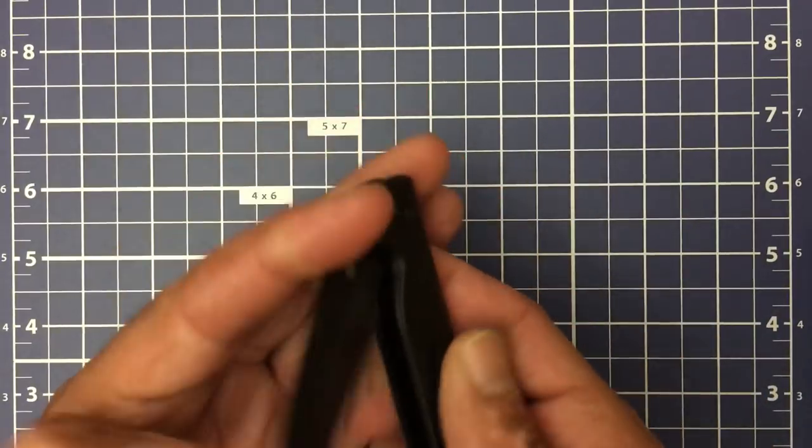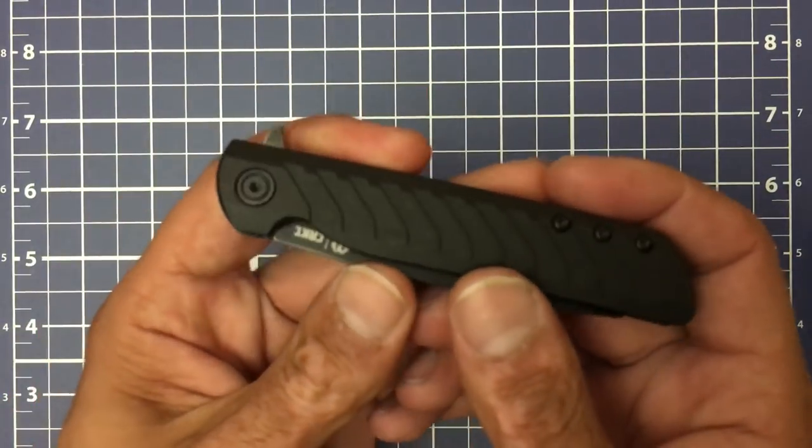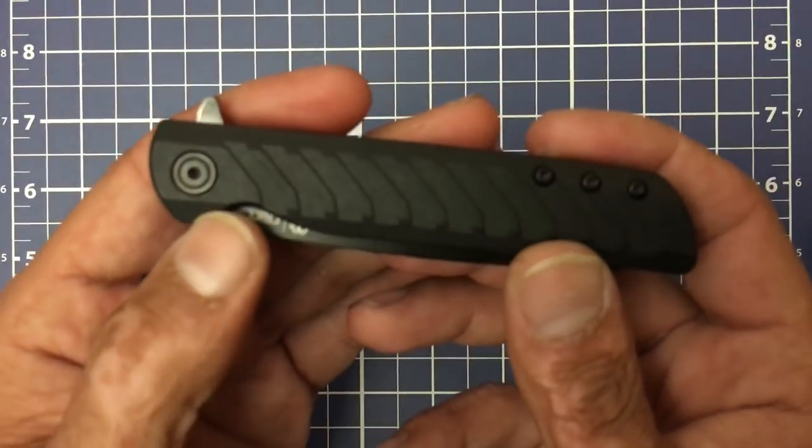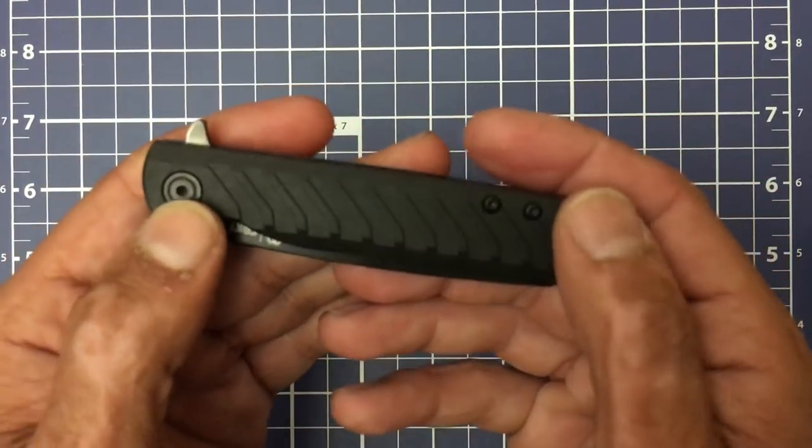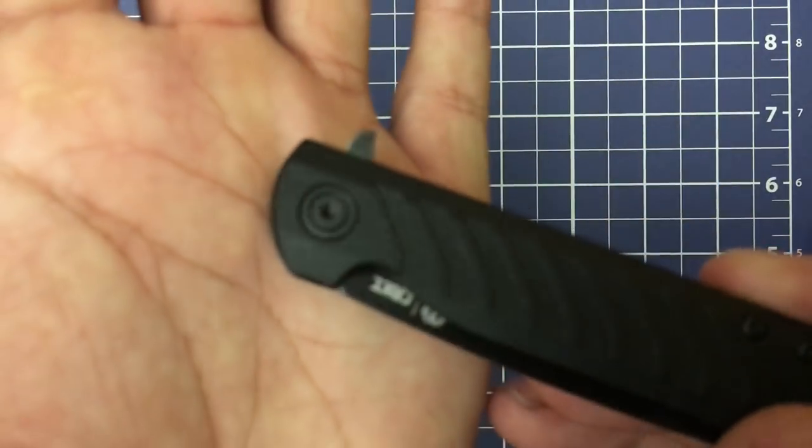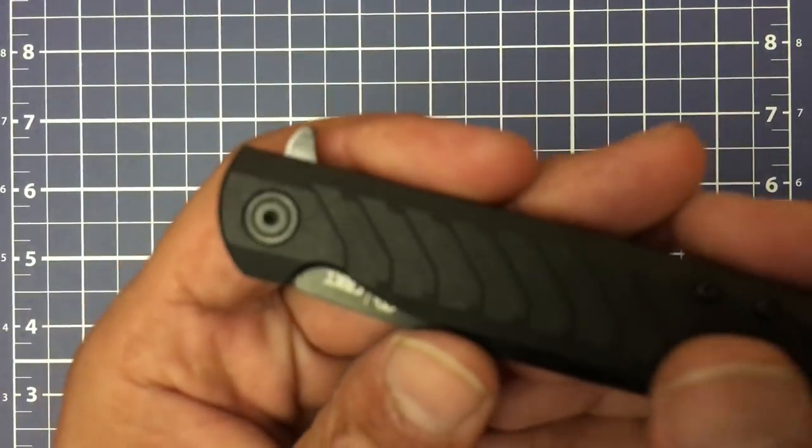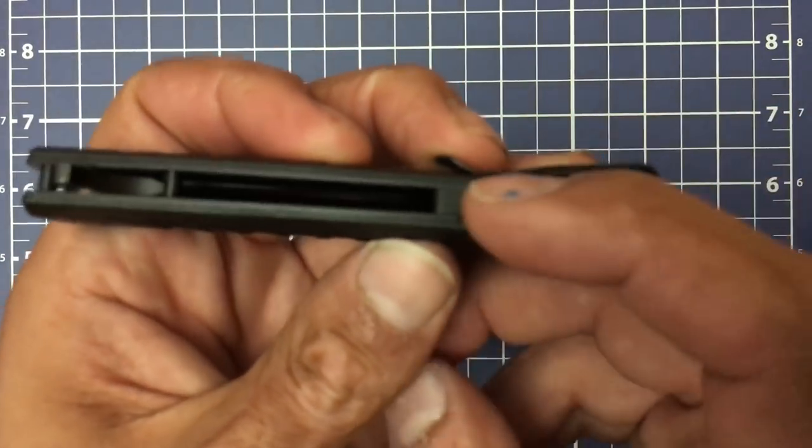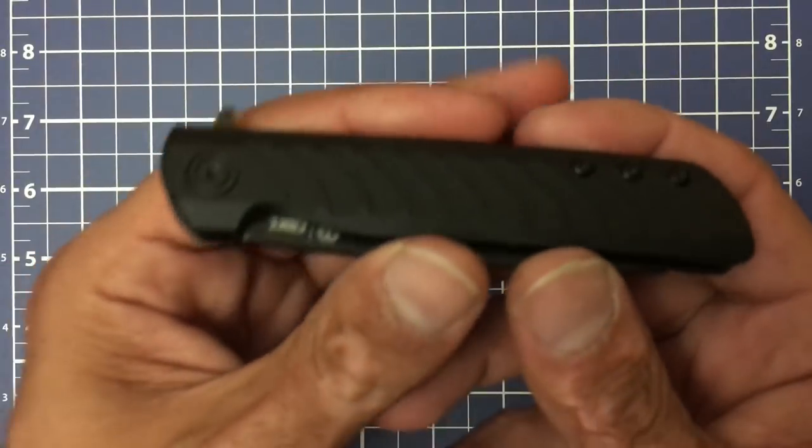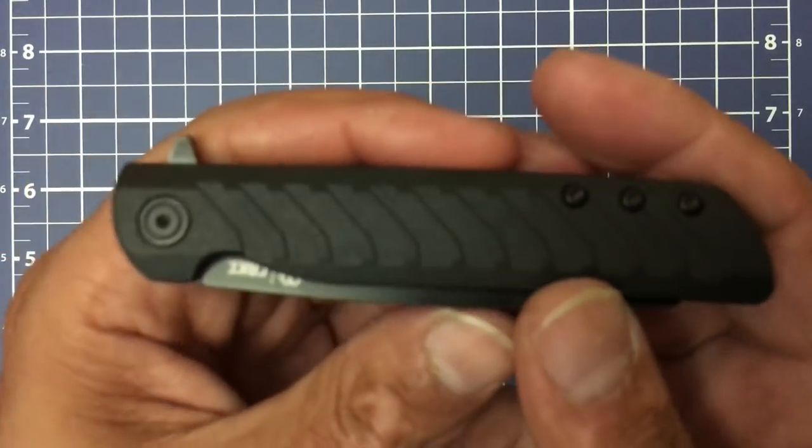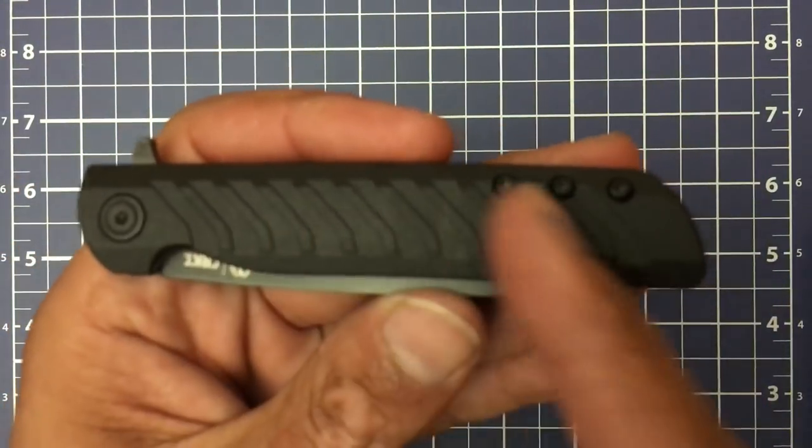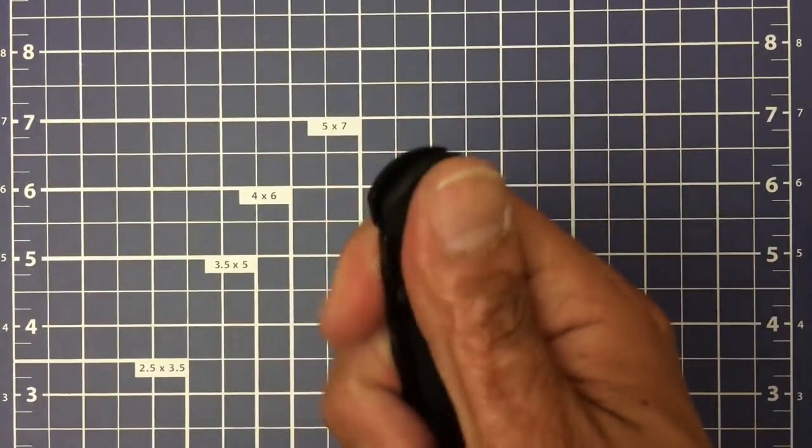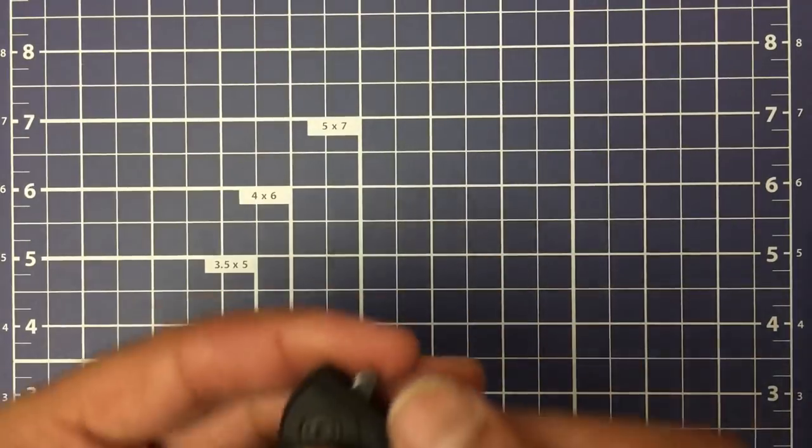Let's close this guy up. You have these GRN handle scales. You have T8 pivot to T6 body screws. Somewhat decorative pivot with that little outer circle on there. You have a GFN backspacer. Basically, it's glass reinforced nylon for anybody who didn't know that. And you have this milled pattern in here that gives you a little bit of traction. I mean, it's not excellent, but it gives you some.